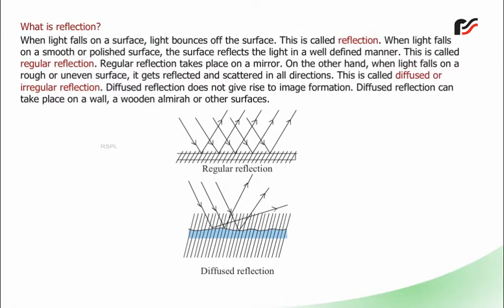When light falls on a surface, light bounces off the surface. This is called reflection. When light falls on a smooth or polished surface, the surface reflects the light in a well-defined manner. This is called regular reflection. Regular reflection takes place on a mirror.